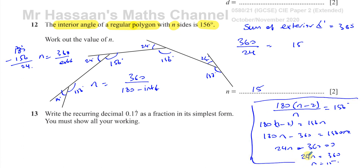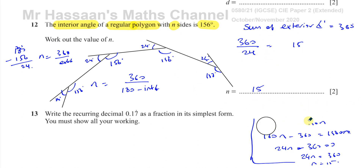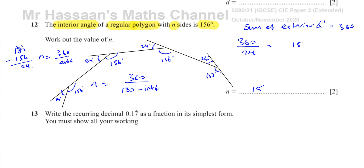This is a perfectly fine way to do it. The sum of all the interior angles divided by the number of sides gives you the size of one interior angle, and since we know that's 156, we can find n by solving the equation. But I find the exterior angle method easier — 360 divided by the exterior angle gives you the number of sides, because the sum of exterior angles is always 360 regardless of how many angles there are. The sum of interior angles, on the other hand, depends on the number of sides: a triangle has 180, a quadrilateral has 360, and so on. So always work with exterior angles when you can — it makes life easier.